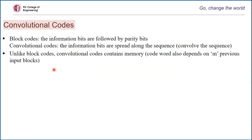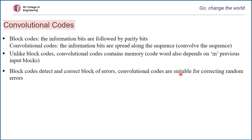Another basic difference is that convolution codes have memory to generate codewords. The codeword generated using the convolution technique doesn't just depend on the current information bit — it also depends on M previous input blocks, where M refers to the order of memory. Block codes detect and correct block errors. However, convolution codes are suitable for correcting random errors, since the information bits are spread randomly along the sequence.